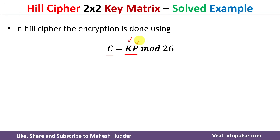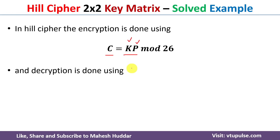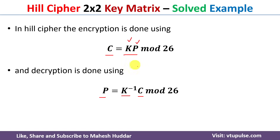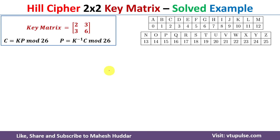We take mod 26 on the multiplication term. Once you get the ciphertext, we need to decrypt it using the Hill Cipher algorithm. Decryption is done using the formula: plaintext P is equivalent to K-inverse times C mod 26, where K-inverse is the inverse of the key matrix and C is the ciphertext. These are the two formulas we use to encrypt and decrypt data in the Hill Cipher algorithm.